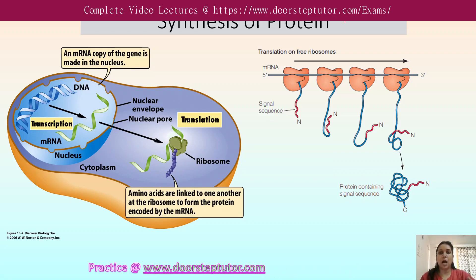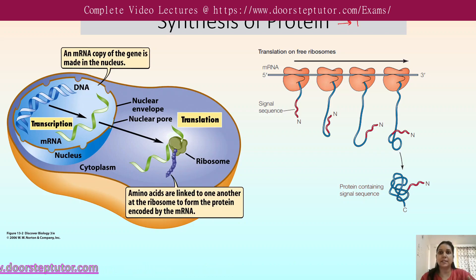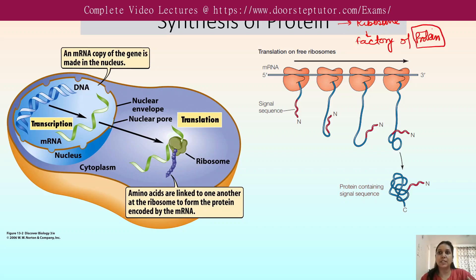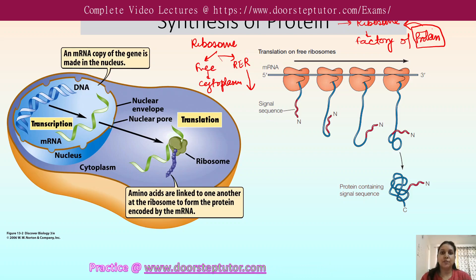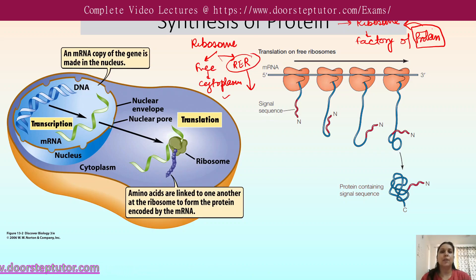Proteins are synthesized in the ribosomes, also called the factory of proteins. Ribosomes are present at two positions: either they are free in the cytoplasm or they are attached to the endoplasmic reticulum, that is the rough endoplasmic reticulum. In this way, proteins are synthesized, sorted, and targeted to different organelles or target locations where their function is required.